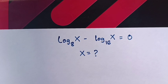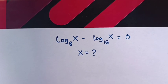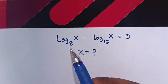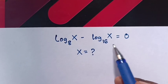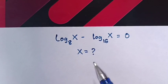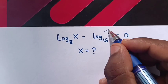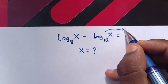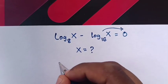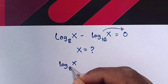Hello. How to solve this logarithmic equation: log x base 8 minus log x base 16 is equals to 0. Find the value of x. First, we take the right side term over, so it will be log x base 8 is equals to log x base 16.